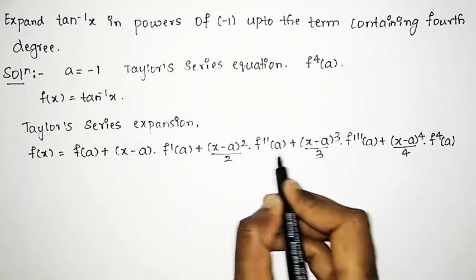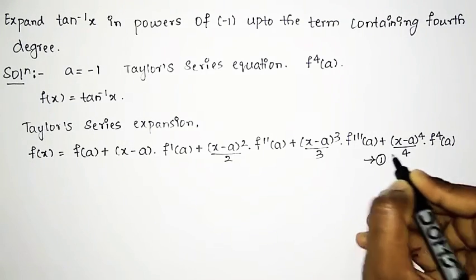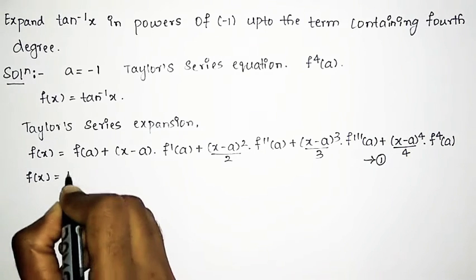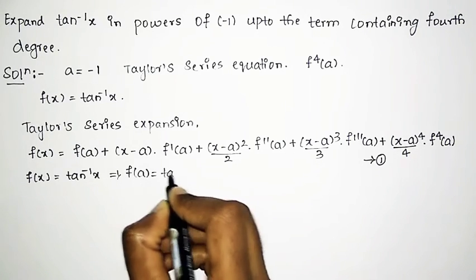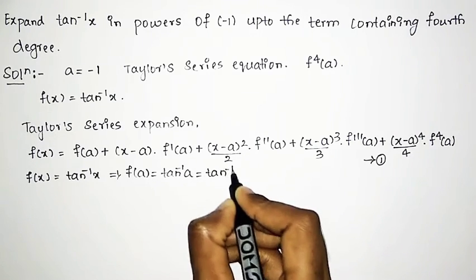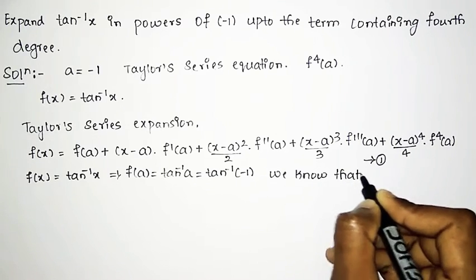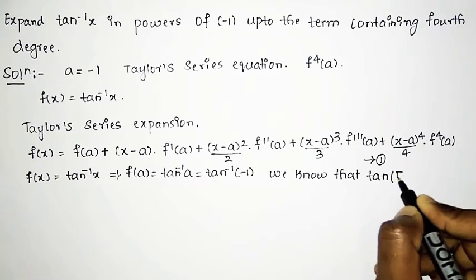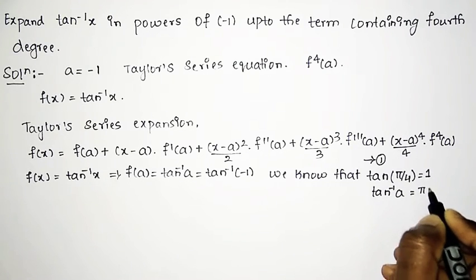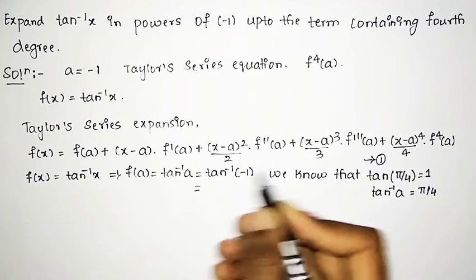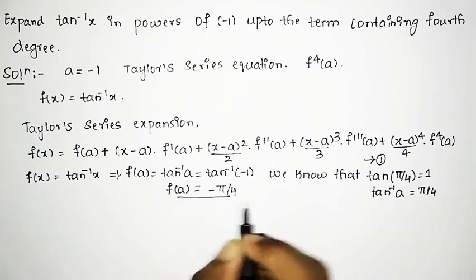First we shall find f(a), f'(a), f''(a), f'''(a), and f⁴(a), then substitute all values into the Taylor series equation. Since f(x) = tan inverse x, we have f(a) = tan inverse of a = tan inverse of minus 1. We know tan(π/4) = 1, so tan inverse of 1 = π/4, and therefore tan inverse of minus 1 = minus π/4. So f(a) = minus π/4.